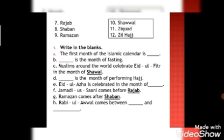Now E part is Eid ul Adha is celebrated in the month of, Eid ul Adha which month is done in the month of? Zilhajj. Jamad-us-Sani comes before Rajab.